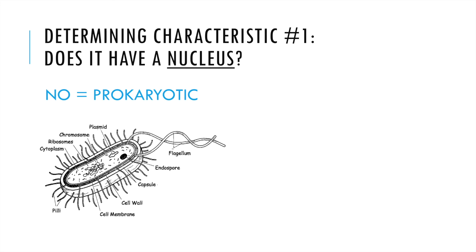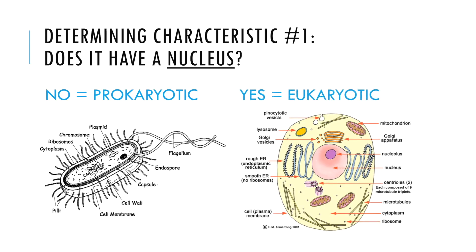The first determining characteristic that we look at is whether or not an organism's cells have a nucleus. If the answer is no, that means the organism is prokaryotic — its cell does not have a nucleus, as you can see in the picture of a prokaryotic cell. If a cell does have a nucleus, that means the organism is eukaryotic. The nucleus stores all of the DNA in a nice organized way, whereas in prokaryotic cells the DNA is all clumped up and tangled together.